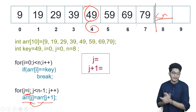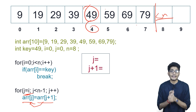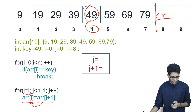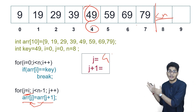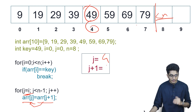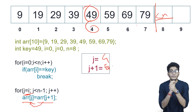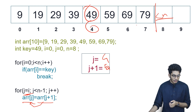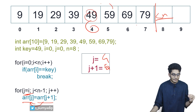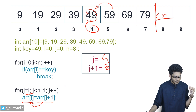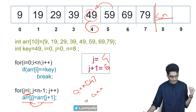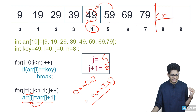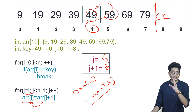At first the value of j is 4, because previously the value of i was 4 — we are performing a linear search. The value of j plus 1 will be 5. At the fourth index we'll replace 49 with 59: arr[4] equals arr[5]. So 59 comes to index 4.